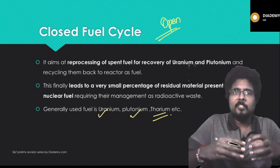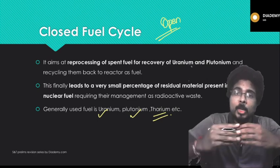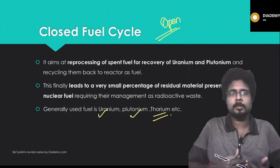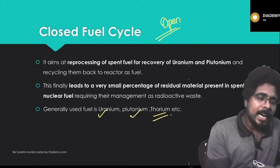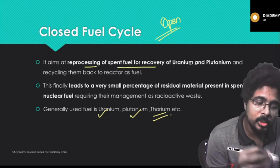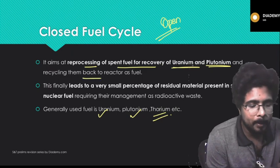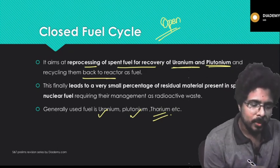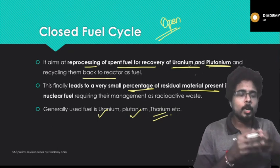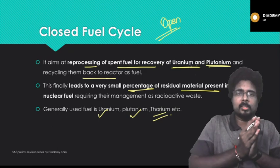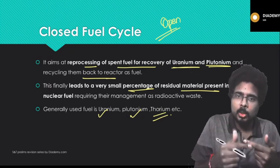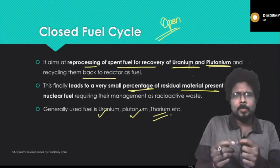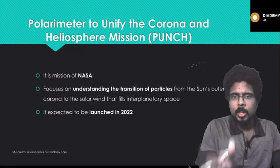Normally, an open process is followed in which the radioactive residue is disposed of, which is harmful for the environment and humans. The closed fuel cycle aims for reprocessing of spent fuel, recovery of uranium and plutonium, and recycling them back to the reactor as fuel. This leads to a very small percentage of residual material. Simply put: closed fuel cycle means reutilization of the residue after the first use, leaving very little waste at the end.